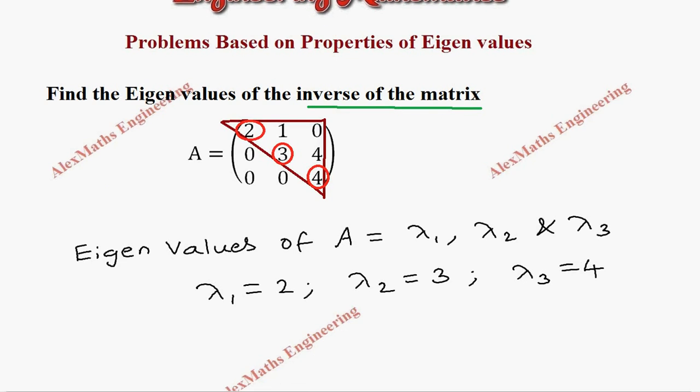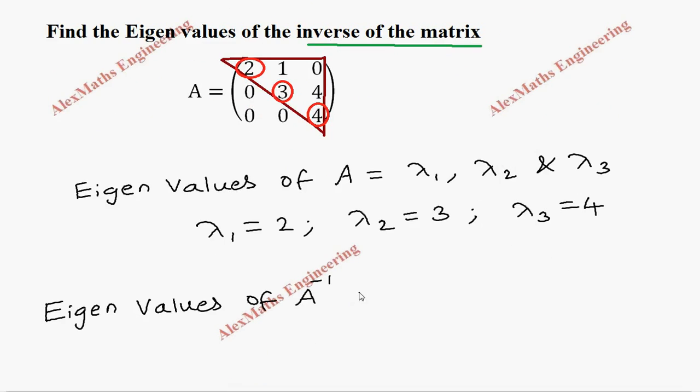So eigenvalues of A inverse are nothing but 1 by lambda 1, 1 by lambda 2, and 1 by lambda 3. Therefore, the values are 1 by 2, 1 by 3, and 1 by 4.